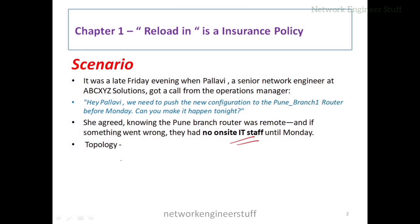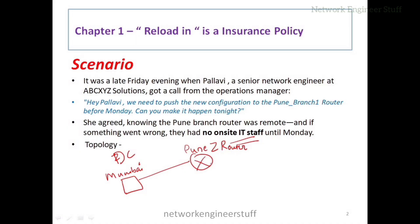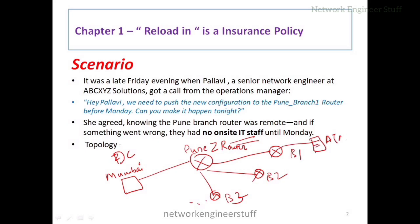Let's say this is a bank network. We have the data center in Mumbai, and this Mumbai data center is connected to a Pune zonal router. That Pune zonal router is connected to several branches in Pune — Branch One, Branch Two, Branch Three — and these branches are also connected to some ATMs.